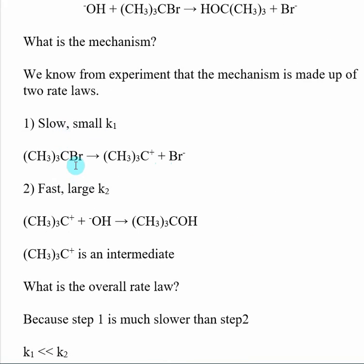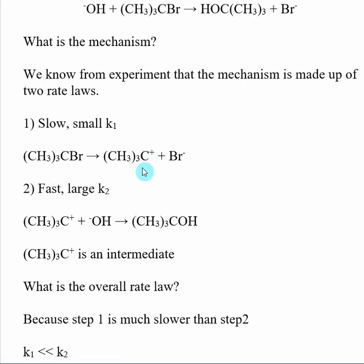In the first step, the bromine actually pops off to form a carbocation — a carbon with a positive charge. In this first step, the reaction is slow, meaning we have a small k. We know that because we're going from a relatively stable species, where carbon has a full octet, to a carbocation where the carbon has a violated octet and is very unstable. So we're going from a more stable to a less stable situation — that's why it's slow.